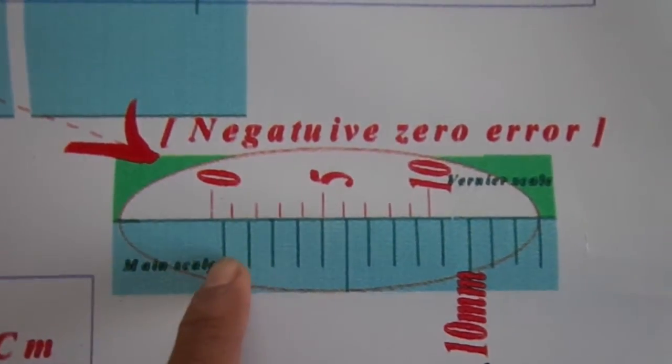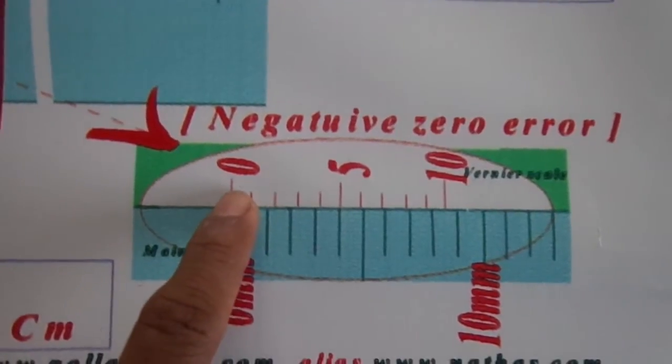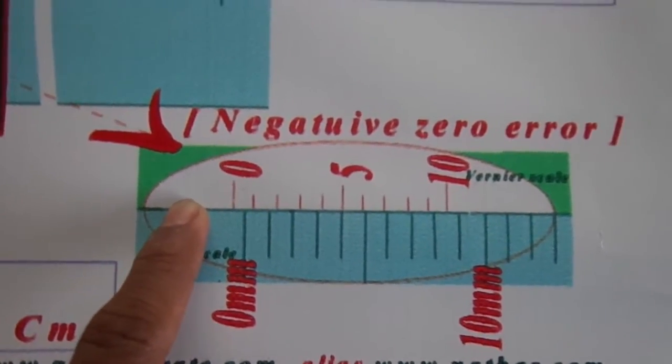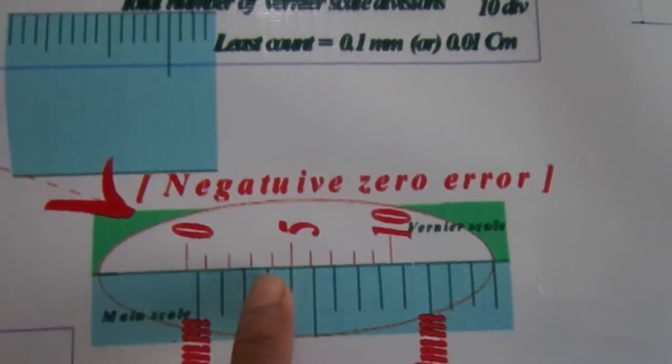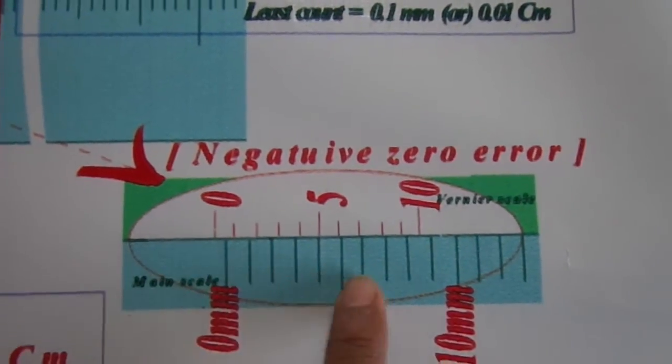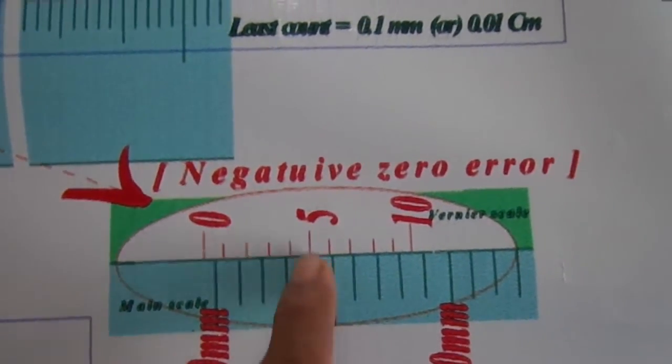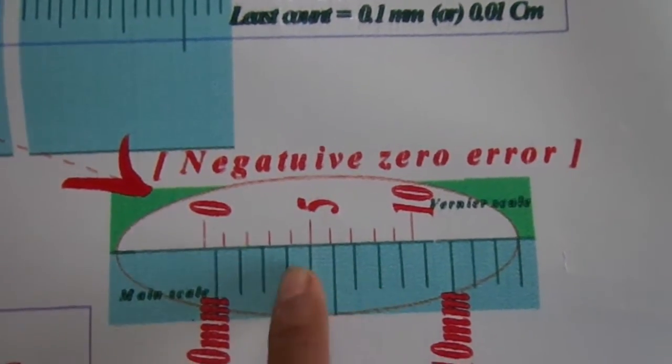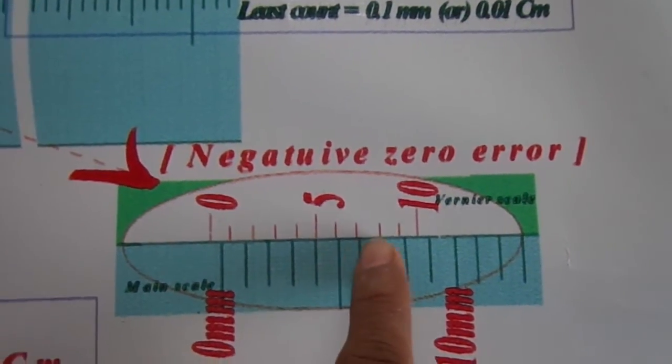The main scale zero is here and the Vernier scale zero has gone to the left side of it. I look for the Vernier coincidence, which division of the Vernier scale makes a coincidence with one of the main scale divisions.